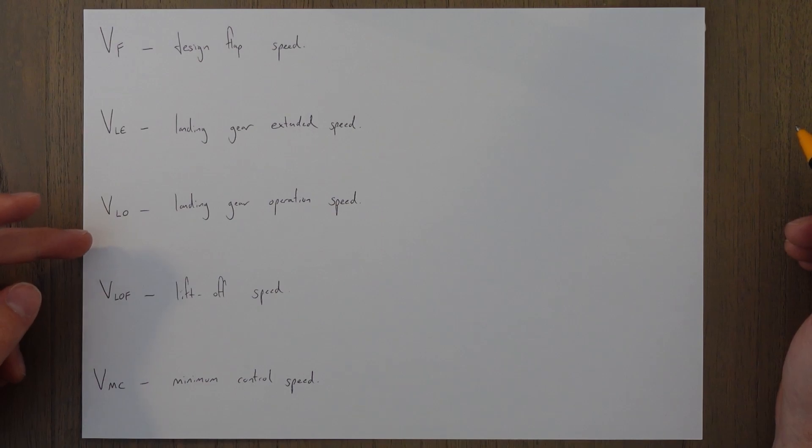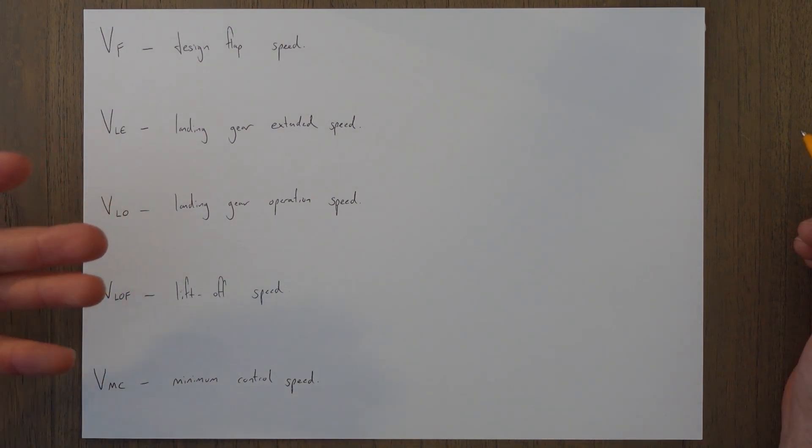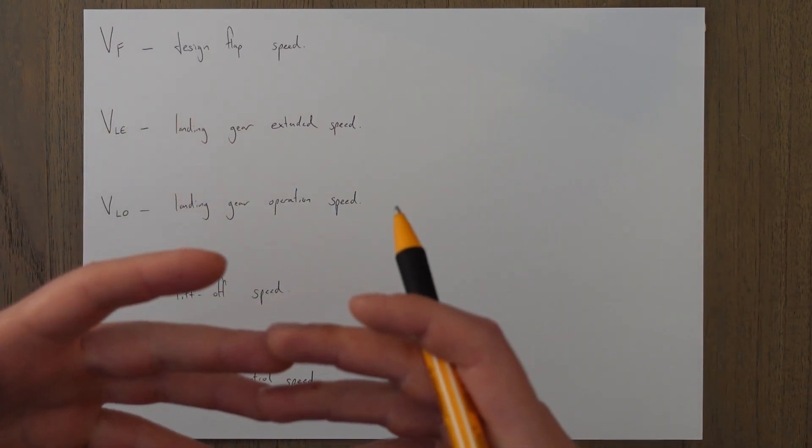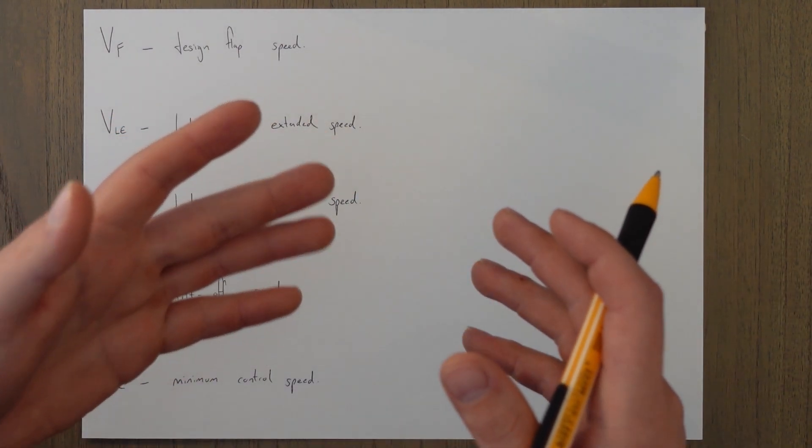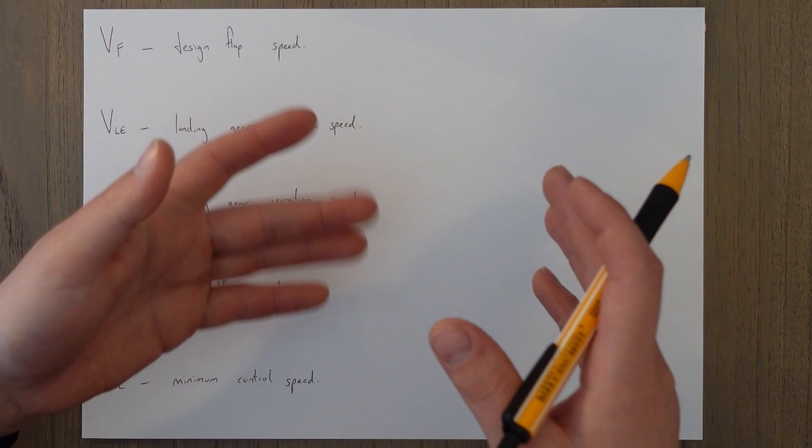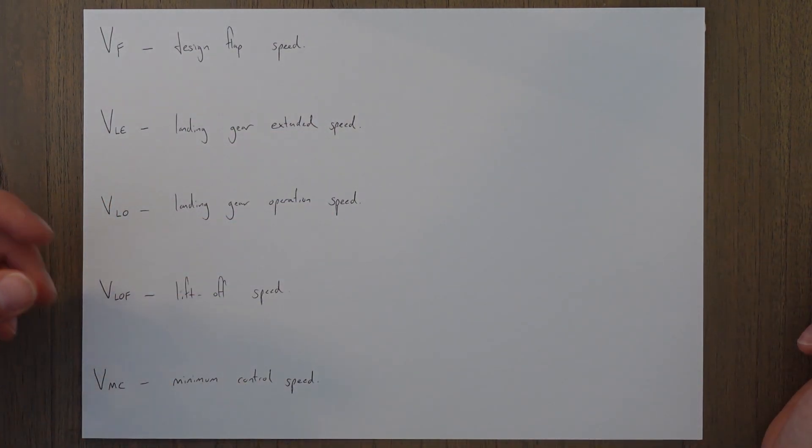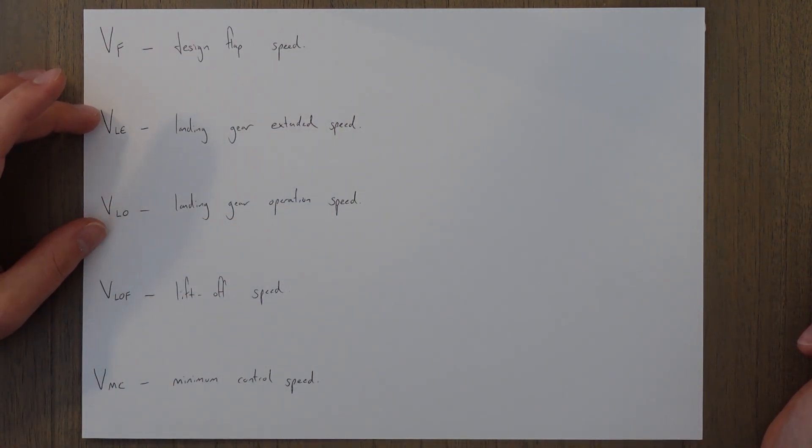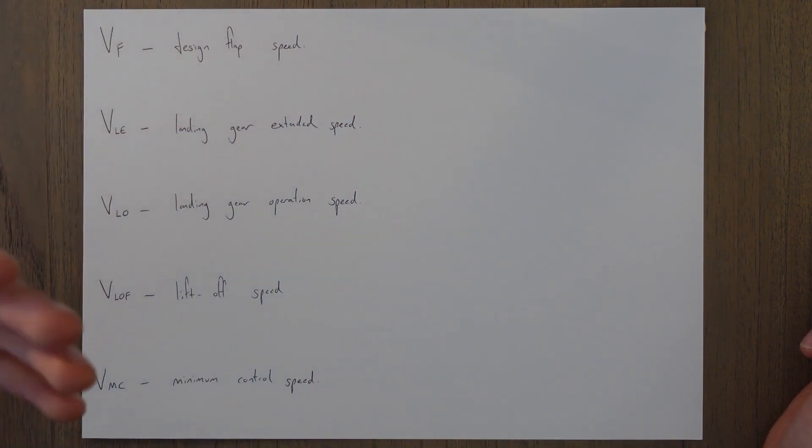VLO is the maximum landing gear operation speed. This is the maximum speed at which the landing gear on a retractable gear aircraft should be extended or retracted, the actual mechanical process of the doors opening and the gear going down or the doors opening and the gear coming back up. Sometimes these speeds can be different for extension and retraction.